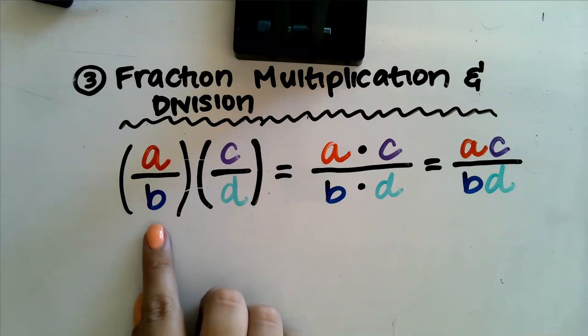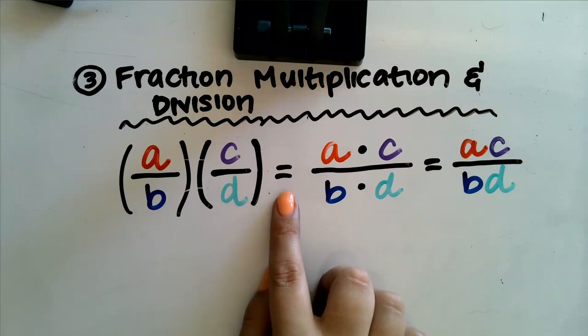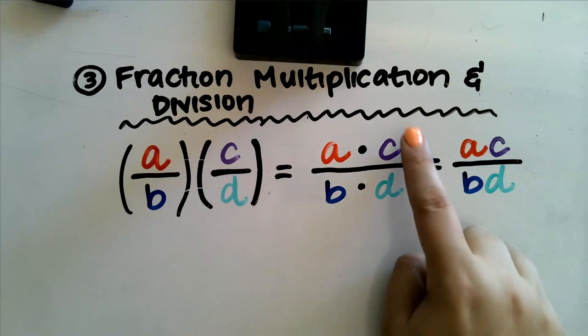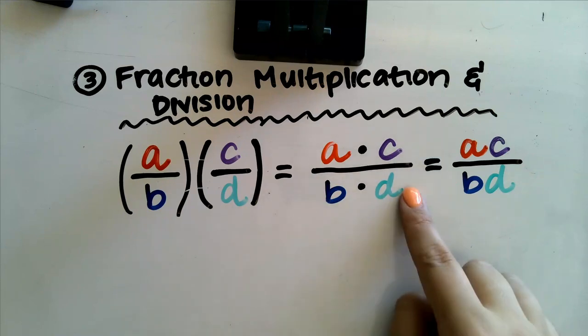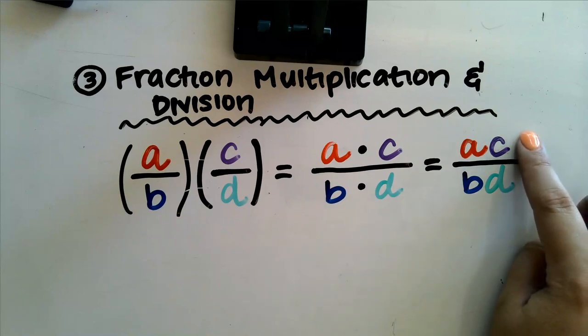So I have two different fractions here, represented by A over B times C over D. Whenever I am multiplying fractions, all I am doing is going straight across, multiplying the numerators, and then multiplying the denominators on the bottom. I can go ahead and rewrite this right next to each other. I don't even have to include the multiplication sign.